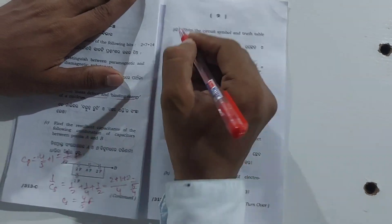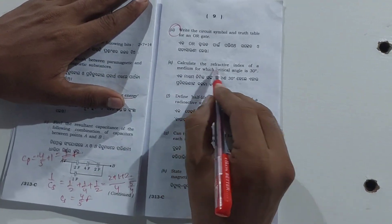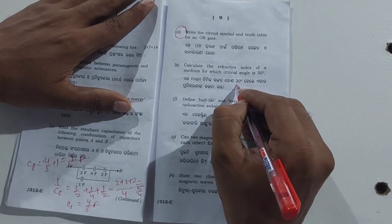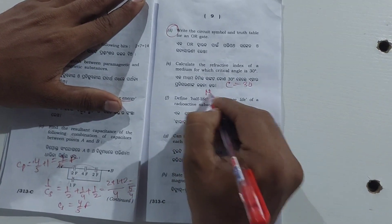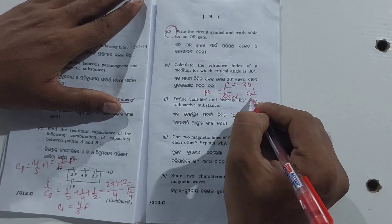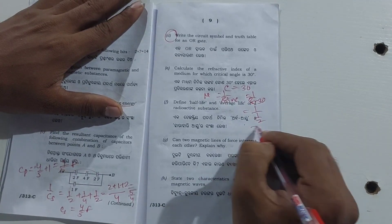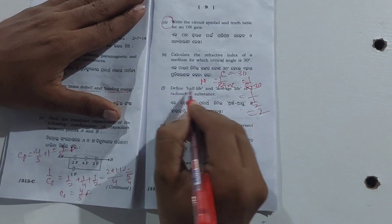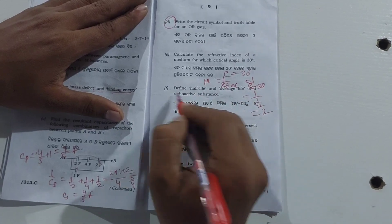The symbol and truth table of the NOR gate is in the syllabus. To calculate the refractive index: given critical angle is 30 degrees, refractive index mu is equal to 1 by sin(30°), which is equal to 1 by (1/2), which is equal to 2. Define half-life and average life.